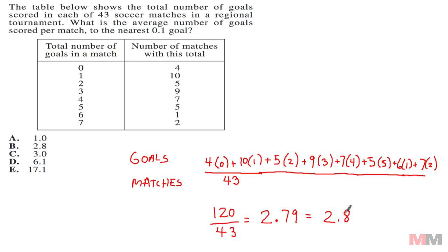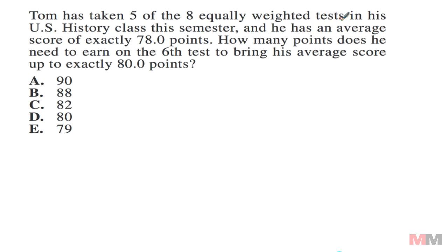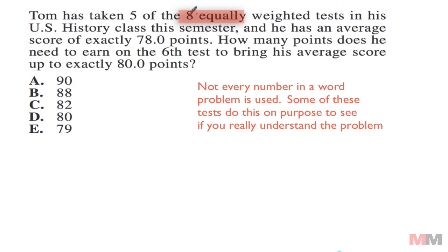Tom has taken 5 of the 8 equally weighted tests in his U.S. History class this semester, and he has an average score of exactly 78 points. How many points does he need to earn on the 6th test to bring his average score up to 80 points? There's a lot of numbers going on right there. Some students might just add all these up, but if you break this down, it's actually not that bad. The biggest confusion right here is this 8—that is what I call a distractor. It's there for no reason.